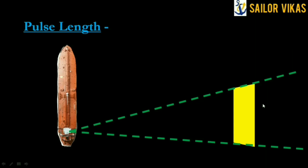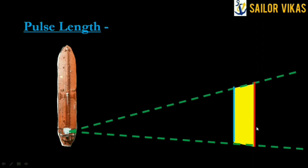This is the pulse length. To understand it further, I am going to name the edges of the pulse. The red edge is called the leading edge, and the blue edge is called the trailing edge — because the red edge is leading, that is why it has been given the name leading edge, and the one that comes afterwards is called the trailing edge.